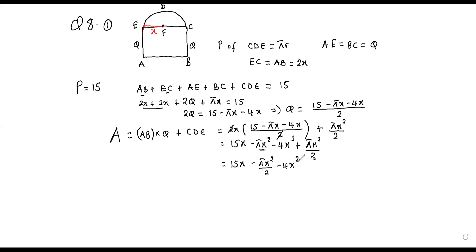Part two says: find the dimensions of the window that will maximize its total area. So whenever we are asked to find the dimension that maximizes, we think of the applications of derivatives. We differentiate A with respect to x, and we're going to get 15 − 2πx/2 − 8x, then we equate this to zero.